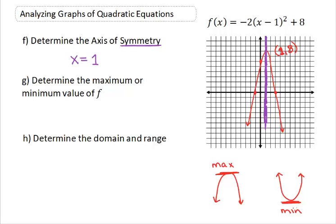So in our example here, our graph opens down, so that means we're going to have a maximum. Not only do we have to figure out whether it is a maximum or a minimum, we have to figure out what that value is. So we have to figure out what is the highest value on this graph. What is the largest y value on this graph? Well, that's going to be the y value of your vertex. So in this case, our maximum is 8.